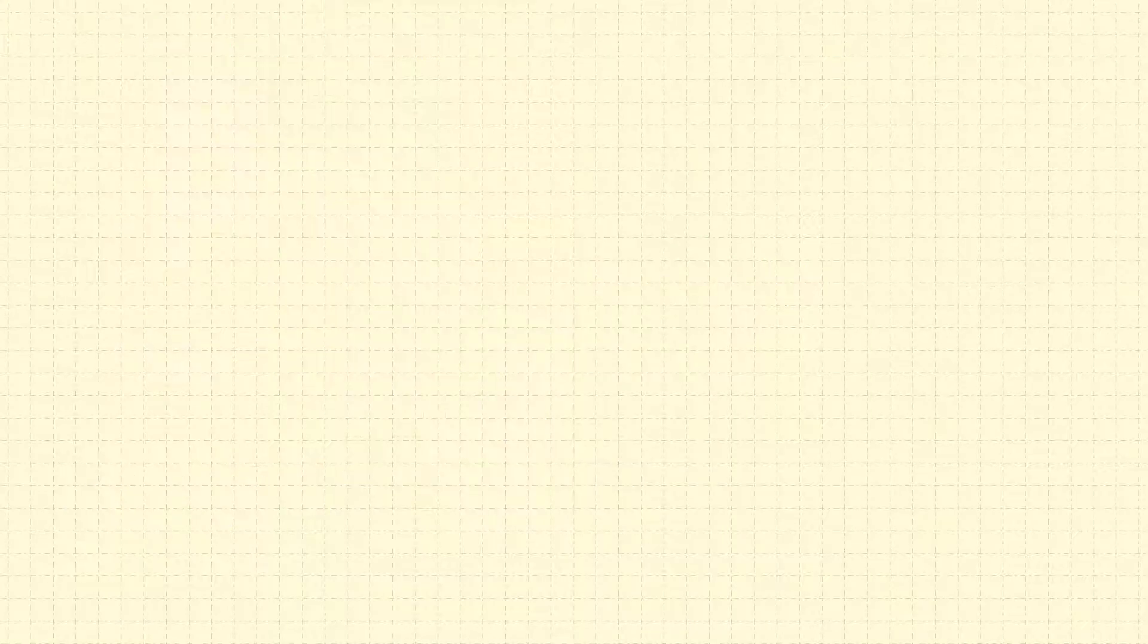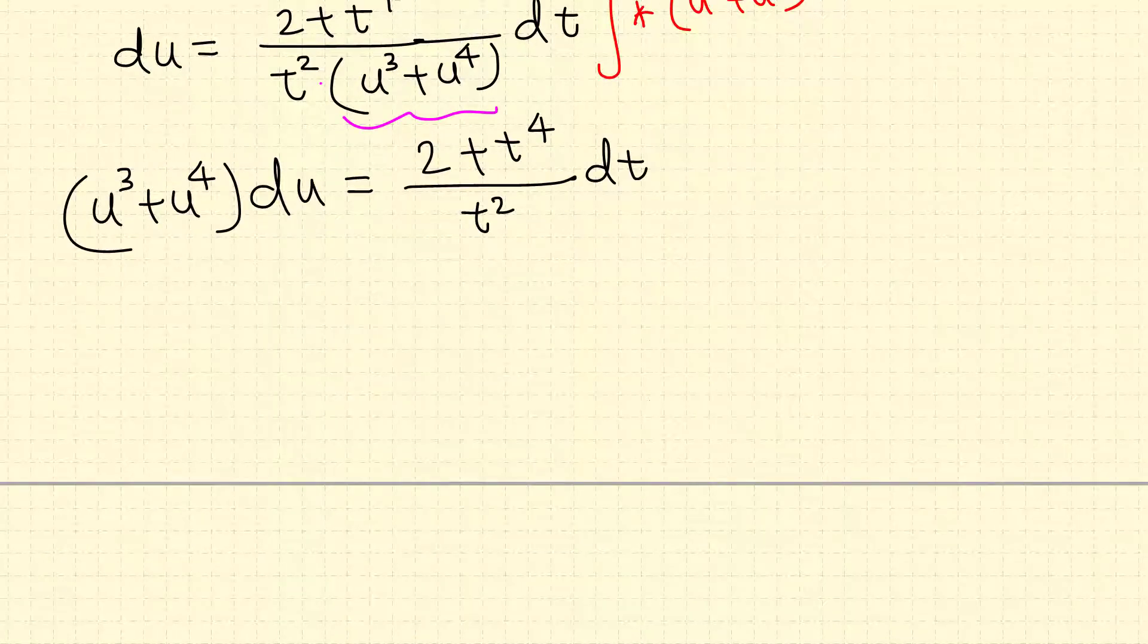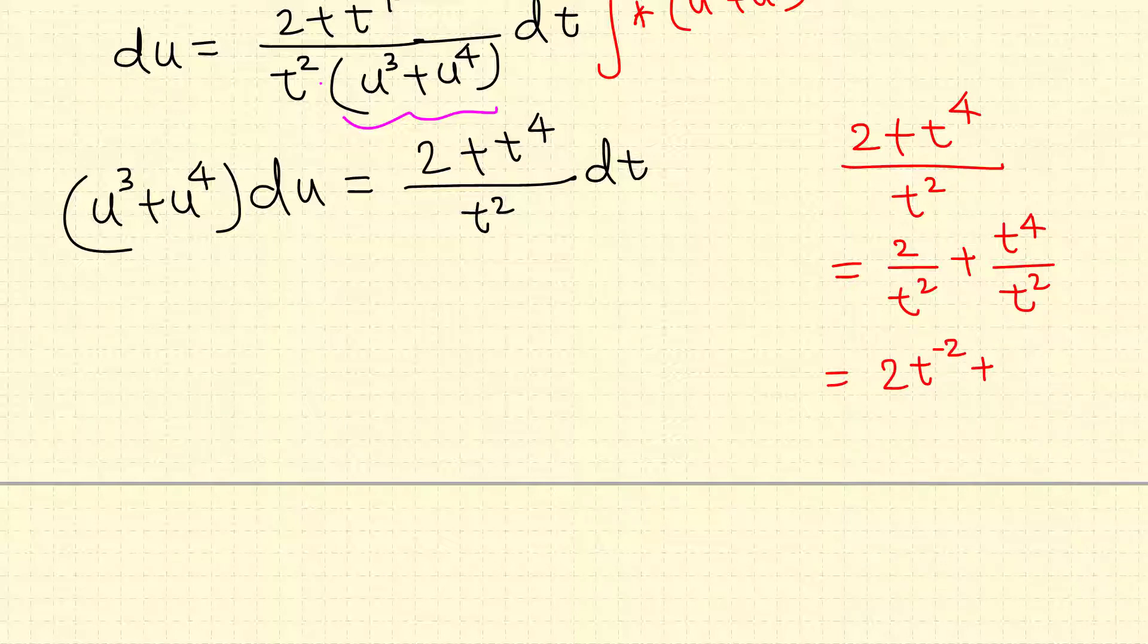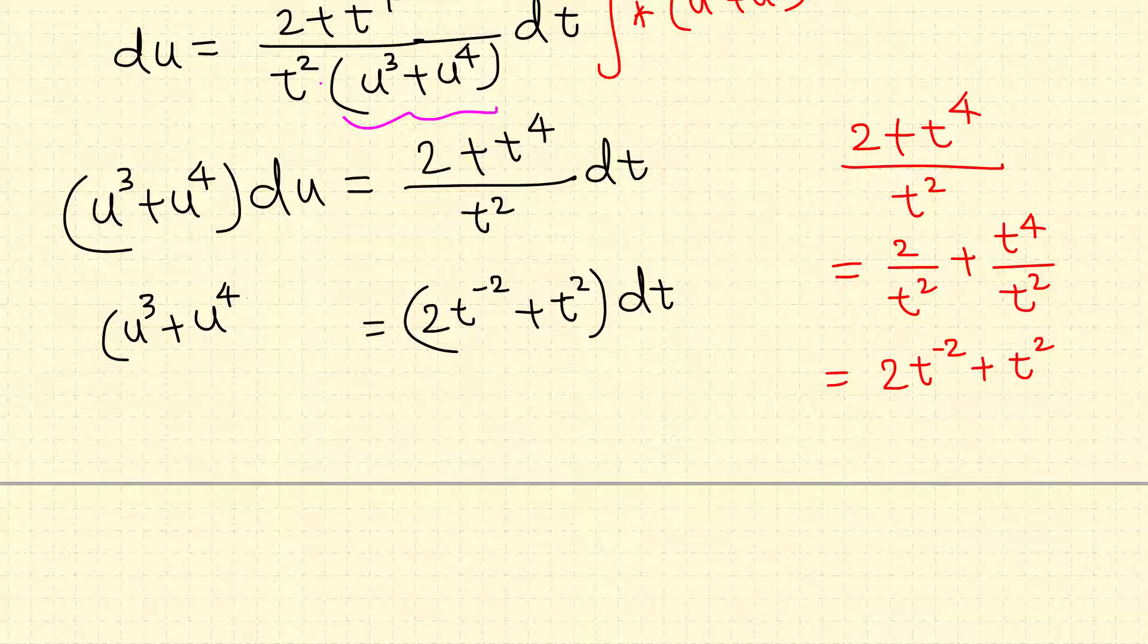So here on the right hand side let me simplify this. 2 plus t^4 all over t^2 is in fact 2 over t^2 plus t^4 over t^2. We can move this up, so 2t raised to negative 2. Two copies cancel, just t squared. So I'm gonna simplify this as 2t raised to negative 2 plus t squared dt.